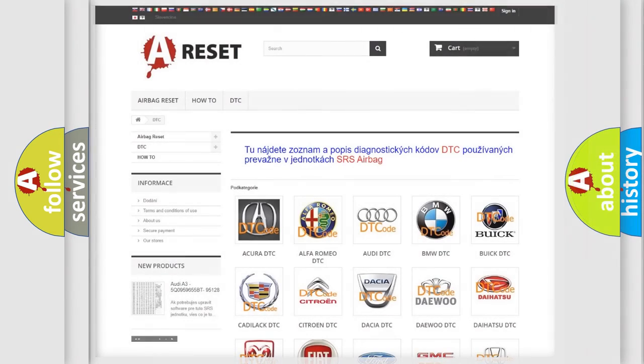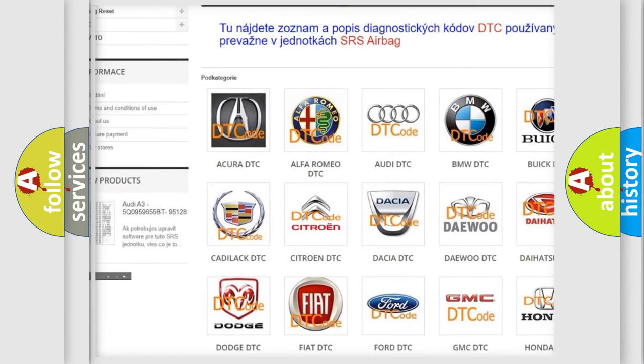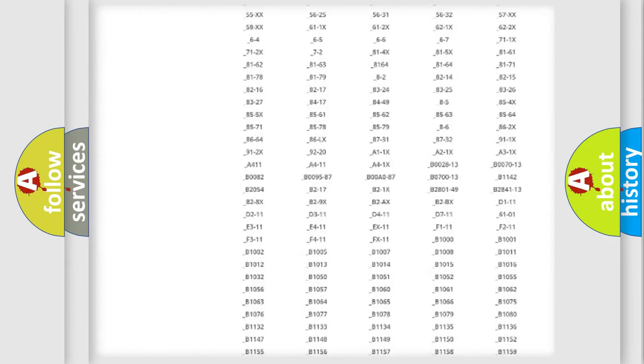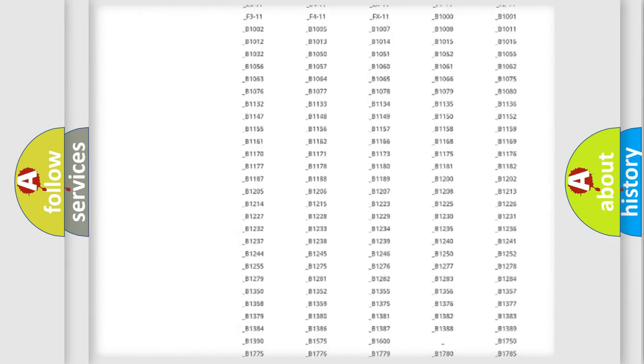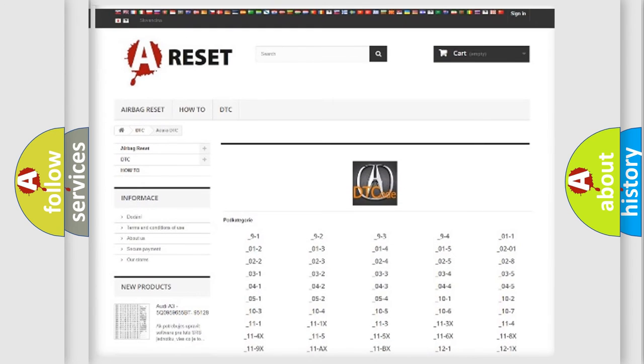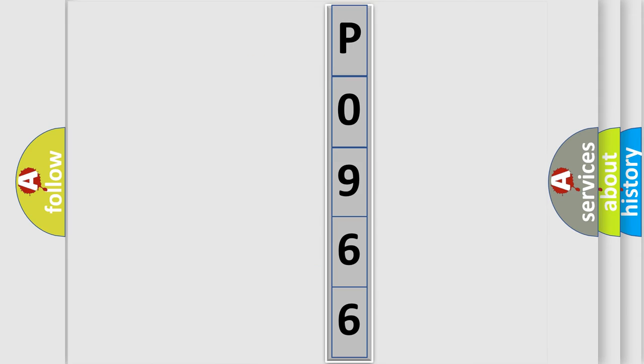Our website airbagreset.sk produces useful videos for you. You do not have to go through the OBD2 protocol anymore to know how to troubleshoot any car breakdown. You will find all the diagnostic codes that can be diagnosed in vehicles, and also many other useful things. The following demonstration will help you look into the world of software for car control units.